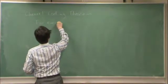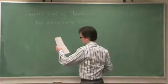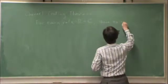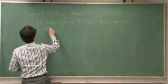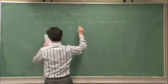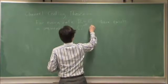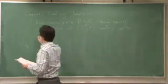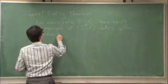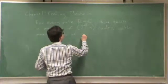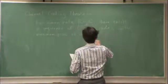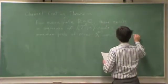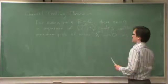For every rate r less than capacity, there exists a sequence of 2 to the nR n codes with maximum probability of error. So this is the statement that we're trying to prove.